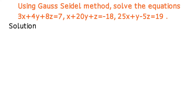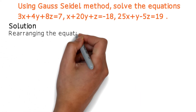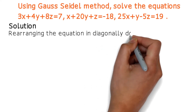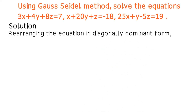The Gauss-Seidel method trick involves solving a question using the Gauss-Seidel method. The first step is to rearrange the equations into diagonally dominant form. We need to rearrange our equations into diagonally dominant form before proceeding.